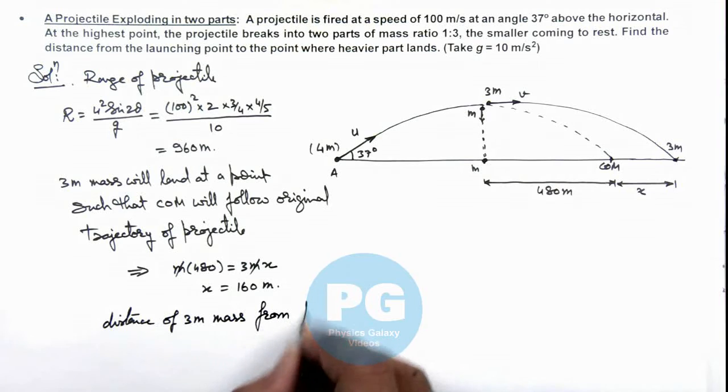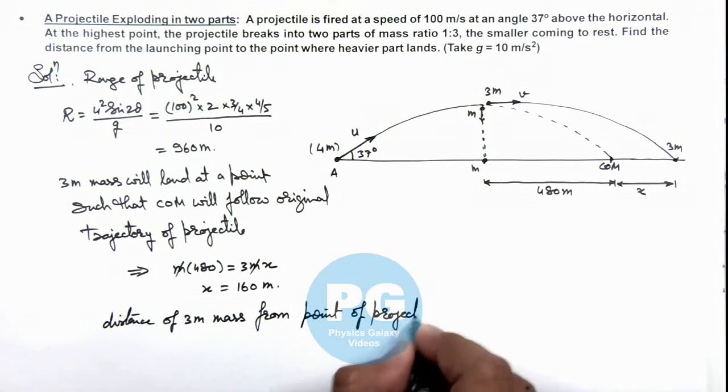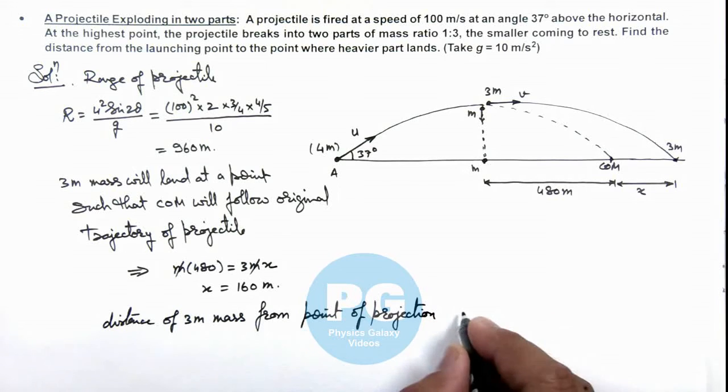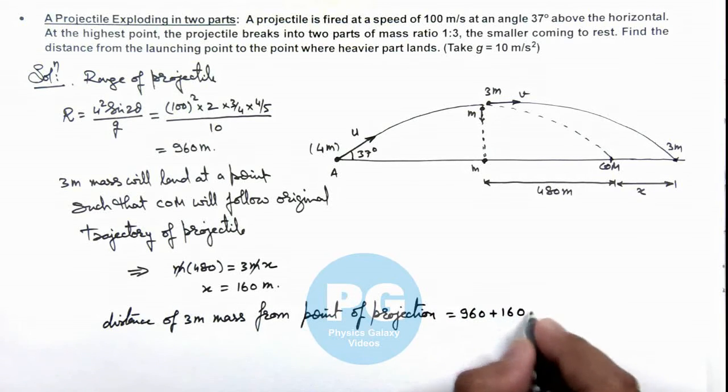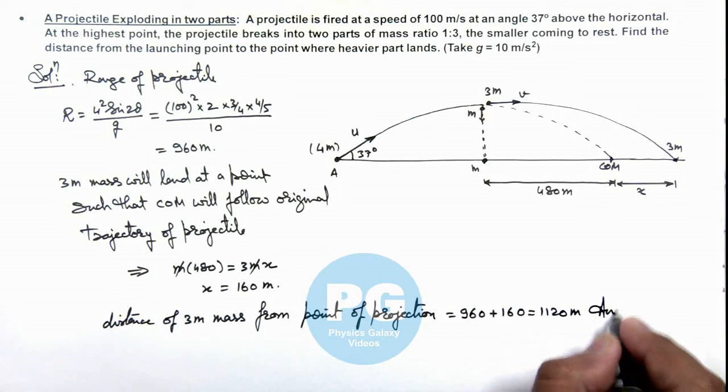Distance from point of projection is, this can be given as 480 plus 160 which is equal to 1120 meters. That is the result of this problem.